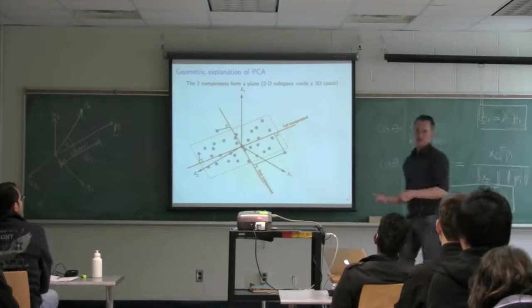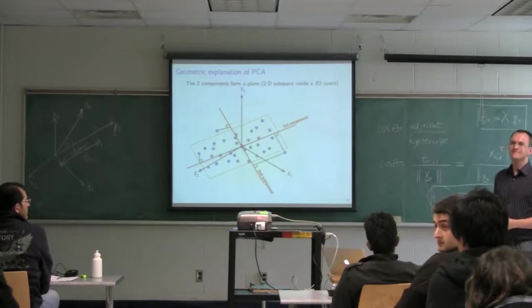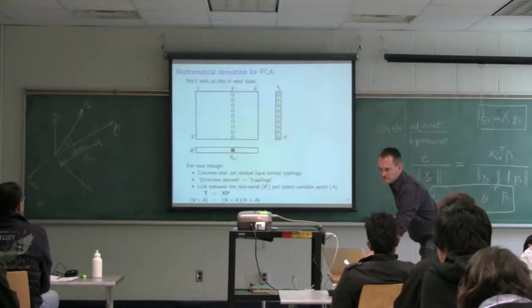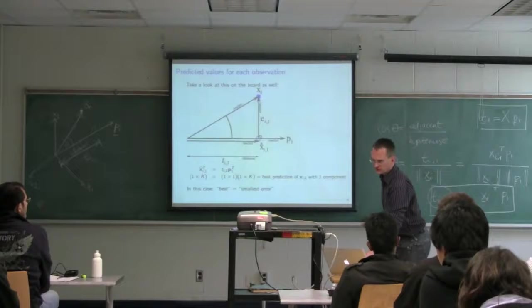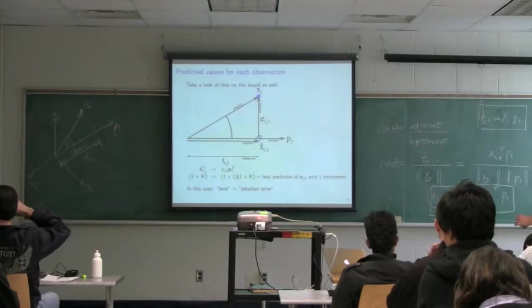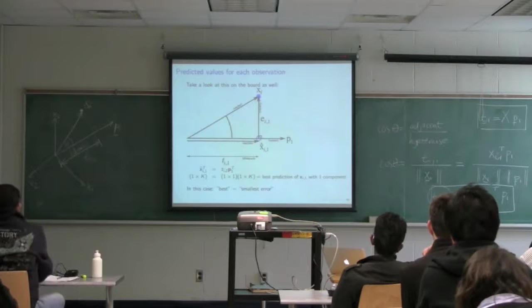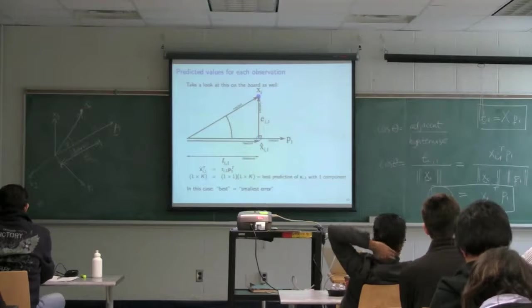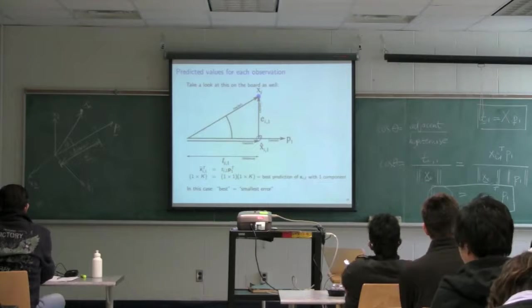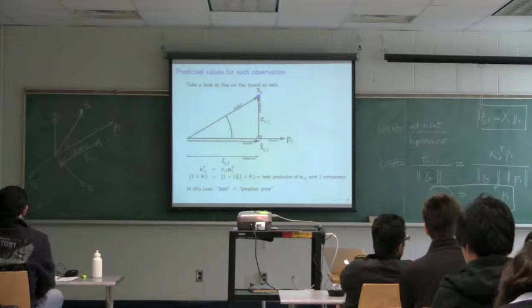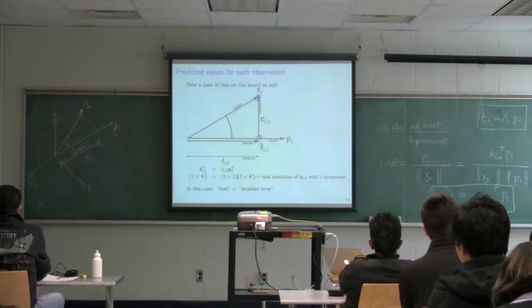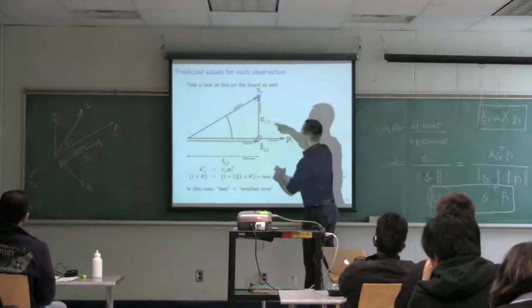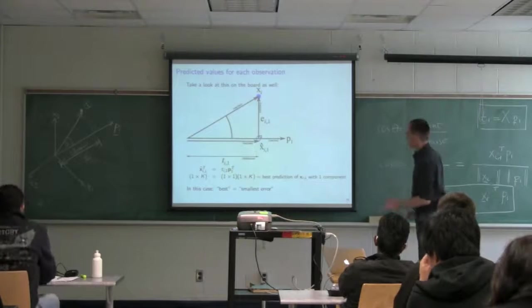That leads us to the next step: looking at residuals and errors. Is that how you choose the number of components? It's very much related to that, yes. PCA explains data in the best possible way, which means there's probably something we haven't explained yet. We explain it with one component to have the lowest error, then add a second, then a third. Why do we keep adding components and how do we know when to stop? Those answers are tied up in looking at the residual distance — the errors.